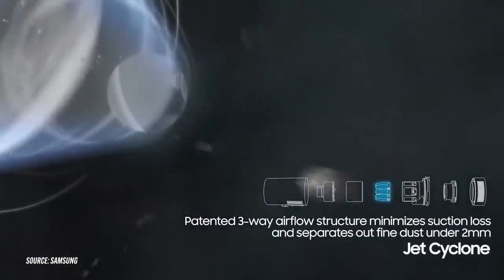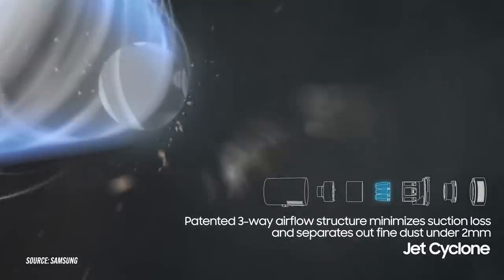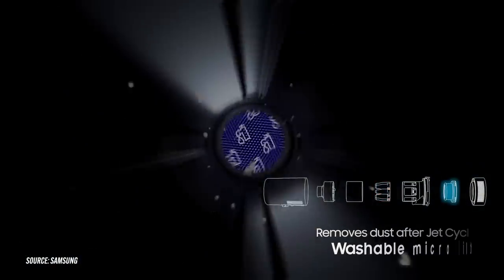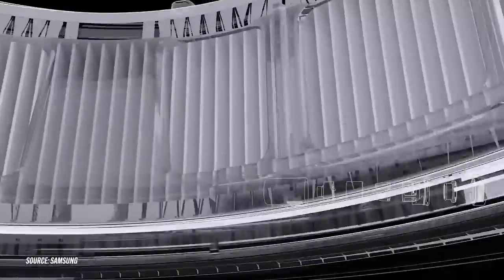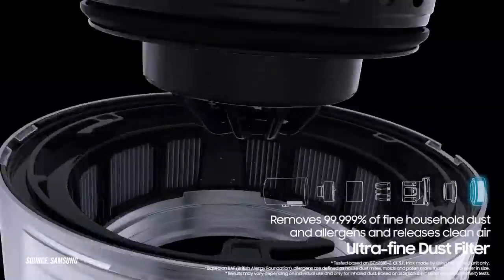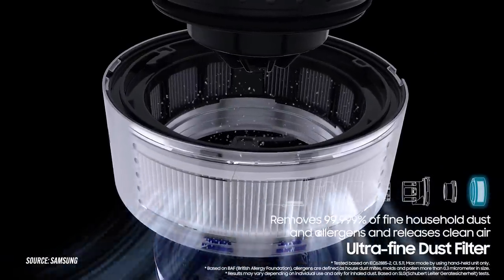Air that's sucked through the main cyclone and mesh grille filter picks up large particles. Meanwhile, the 5-layered HEPA filtration system catches ultrafine dust, up to 99.999% in fact.